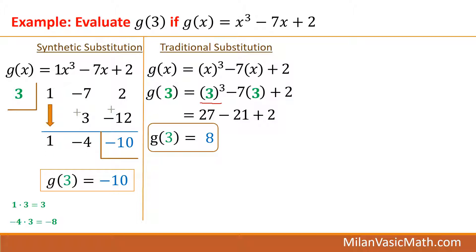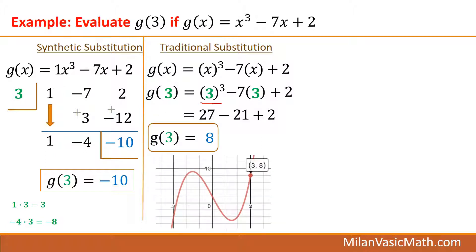So if you notice here, I'm getting conflicting answers. Which one's the correct one? Well, if I graph g of x, I get this curve and as you can see here, 3 comma 8 is right there. So the traditional substitution is correct, which tells me that what I did with synthetic was the wrong synthetic substitution. And the reason it's wrong is something we're going to show you right now.